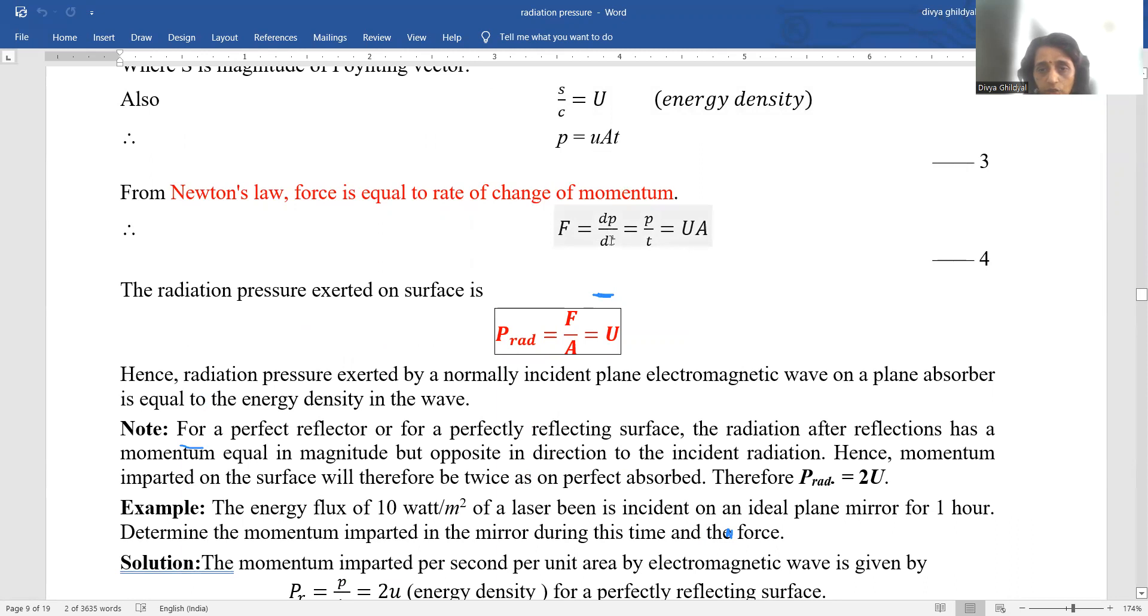Now from Newton's law force is equal to rate of change of momentum. So we have momentum expression here. We are just going to do a differential of this expression with respect to t. So f is equal to dp by dt. p is u a t.